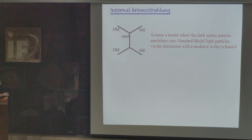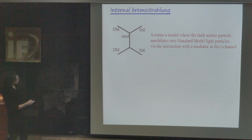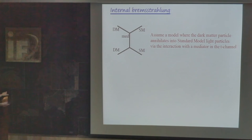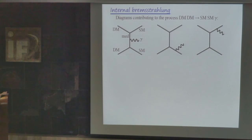The second signal — internal Bremsstrahlung — is perhaps less trivial and less known. This requires the existence of a mediator exchanged in the t-channel. It is very important to have dark matter particles that annihilate via a mediator in the t-channel.